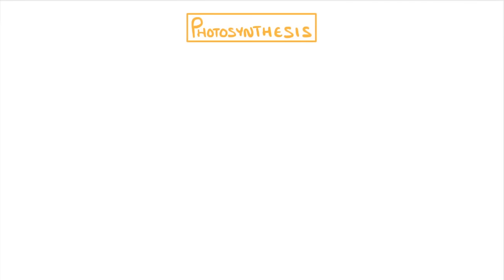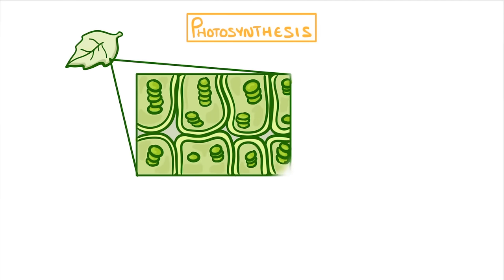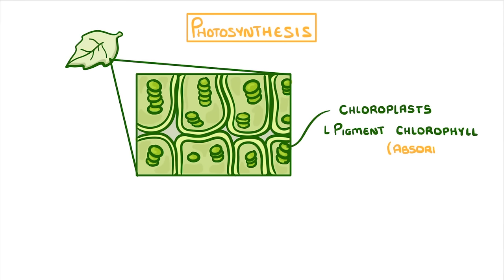In order for a plant to grow and survive it has to carry out photosynthesis. This process takes place in the leaves and more specifically the subcellular structures called chloroplasts. Within these structures is a pigment called chlorophyll that can absorb light, which you can think of as little packets of energy.